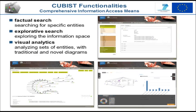This prototype does not only support the analysis of data, it supports different means to access information. That is, with Qubist, it is possible to conduct factual search. If the user has a precise information need, she can search for specific entities and facts in the information space.